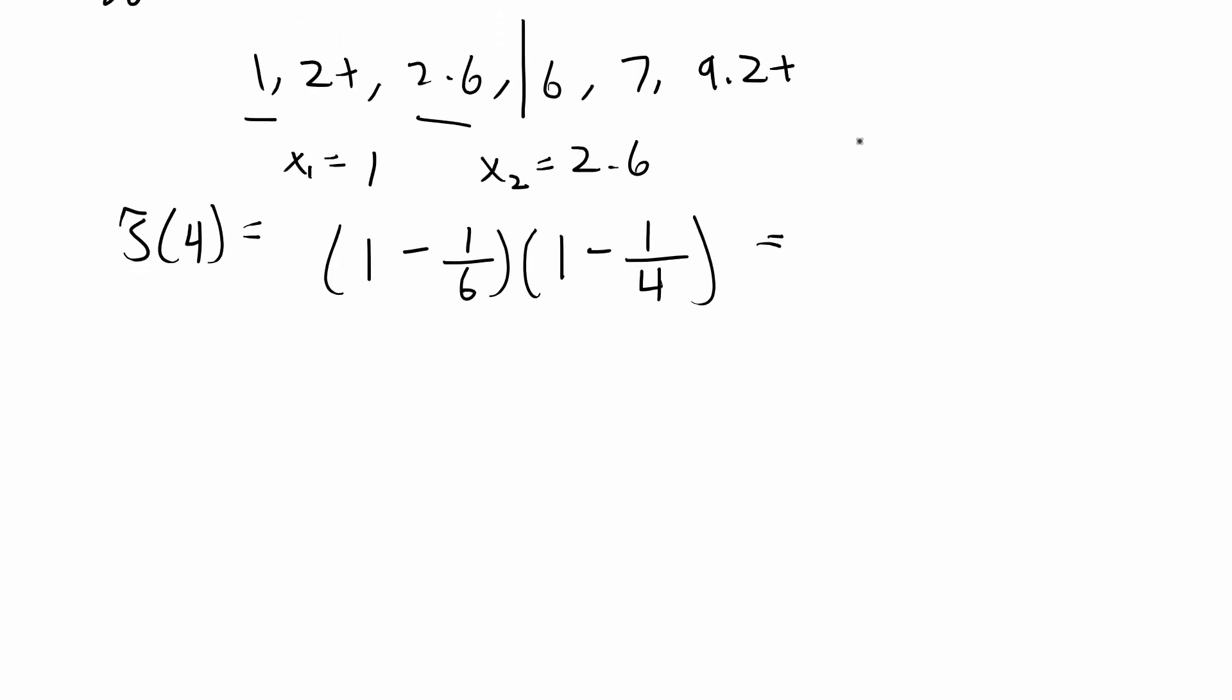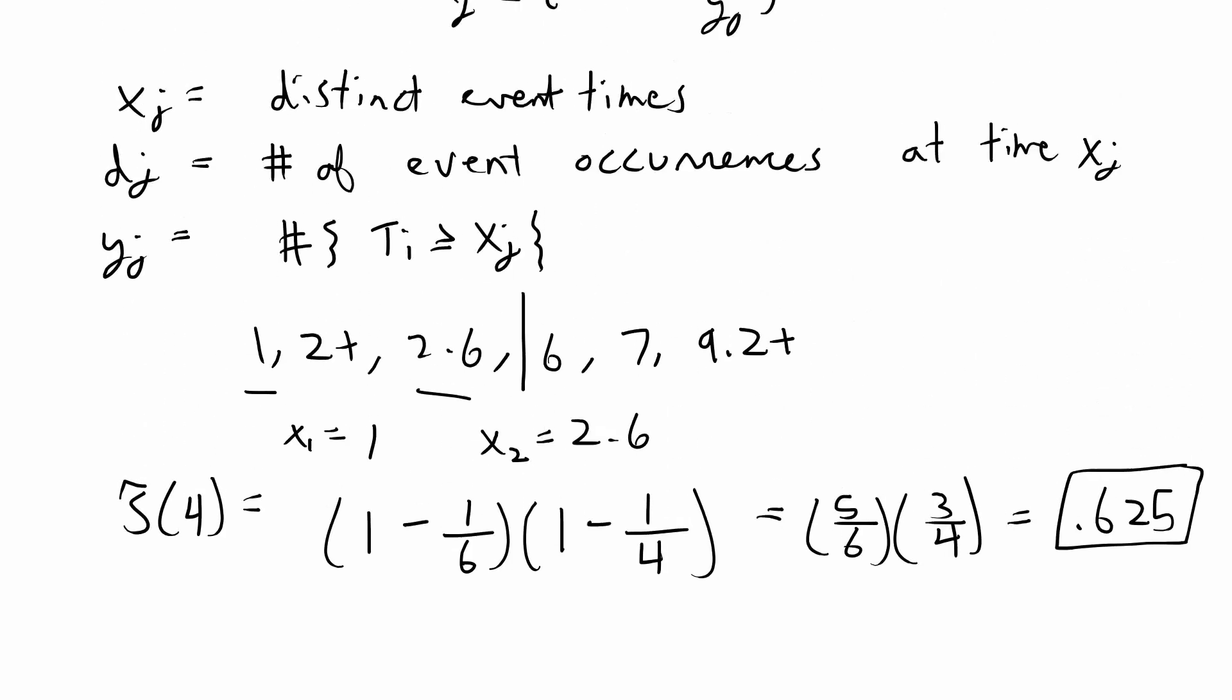We're done plugging everything in and that would just give us 5 over 6 times 3 over 4, which is equal to 0.625. And we are done with this problem.